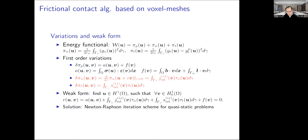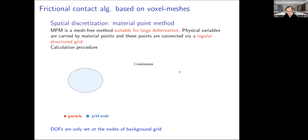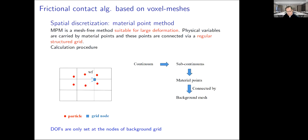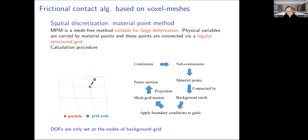Now we can evolve boundary, but for the physical fields updating, we use the material point method. MPM is a mesh-free method suitable for large deformation. In the MPM, a continuum is discretized into several subcontinua, represented by material points. These points are connected with our background mesh by weighting functions. After applying boundary conditions to the grids, the mesh deforms, and the motion of the nodes is projected into material points.